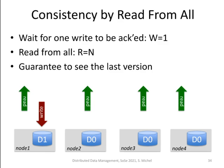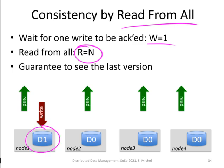We can also go to the other extreme: 'consistency by read from all.' In this case, R is set to N so we are reading from all machines, and W equals 1. Even though some nodes may still have old data, because we are reading from all nodes we will also see the updated data, so it's guaranteed to see the latest version.